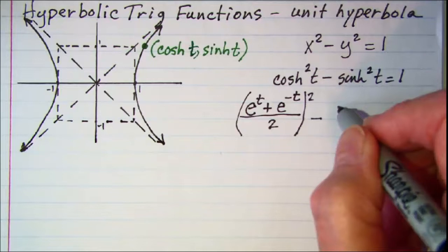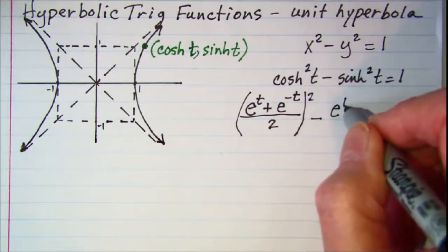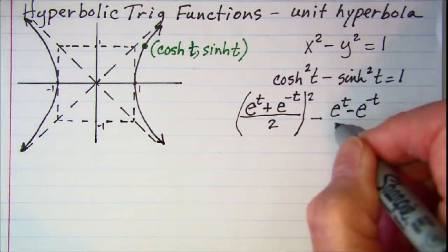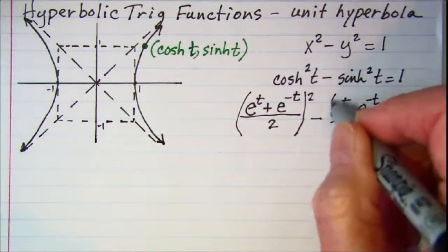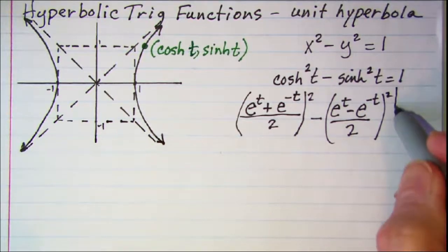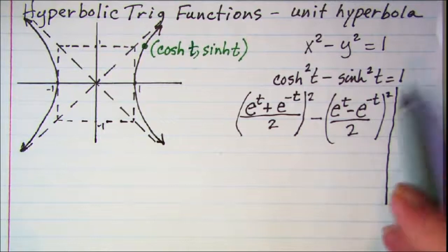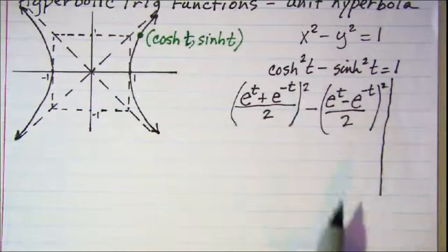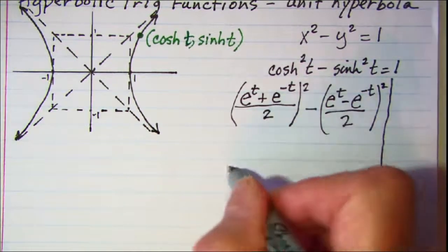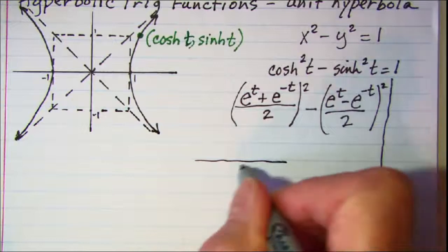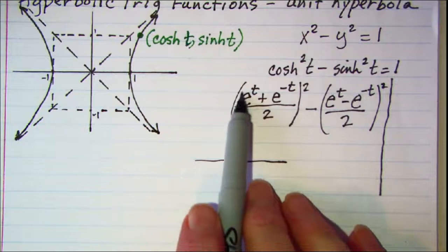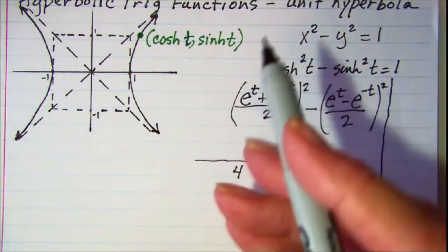Now I'm going to prove that this left side is equal to 1. So first let's square this fraction. The denominator will be 4. Then when I square a binomial I square the first term. So that's e to the 2t.